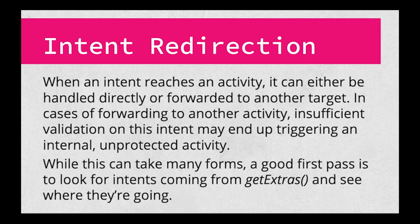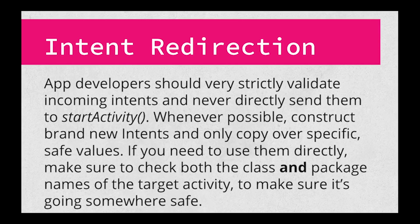Intent redirection is an easy bug, but one with big consequences. When an intent comes into an application, it's typically used to trigger a specific known activity to start — for instance, you might want to open a specific user profile. However, it's also possible to start an activity based directly on an intent. If this intent isn't validated properly, a malicious app could trick the victim app into starting an activity in the malicious app. To fix this, it's important to very strictly validate incoming intents and limit their capabilities. If at all possible, you should construct a new intent and add relevant parameters and permissions as needed, keeping the influence of the incoming intent to a minimum. If you need more flexibility, ensure you check both the target activity class and package name to make sure it's going to a safe recipient.